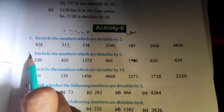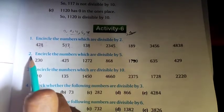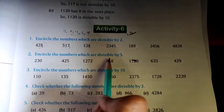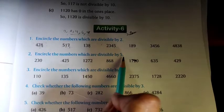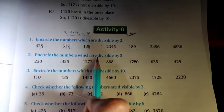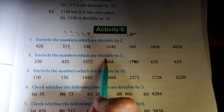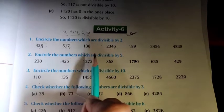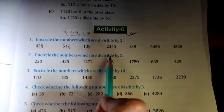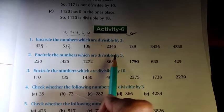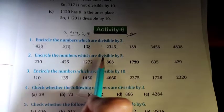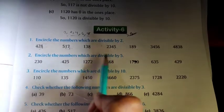Now the next question: encircle the numbers which are divisible by 5. The rule of divisibility by 5 is that if in the ones place the digit is 0 or 5, then the number is divisible by 5.